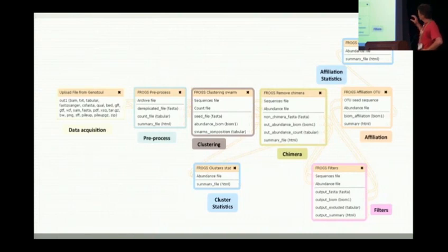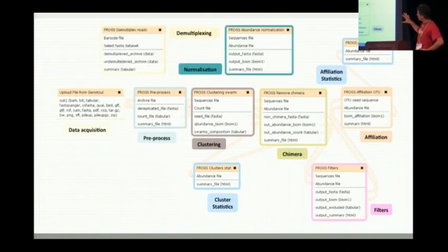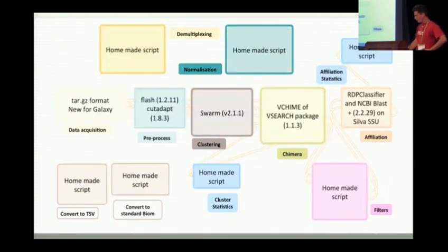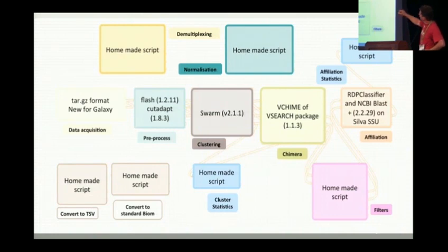Alongside the main pipeline workflow, there are other tools for statistics, normalization, filtering, and conversion. You can see that a lot of existing tools are used, like Flash, CutAdapt, Swarm, VSEARCH, UCHIME, RDP classifier, and BLAST, and there are also some homemade scripts.